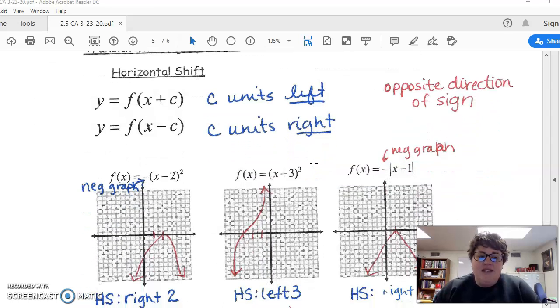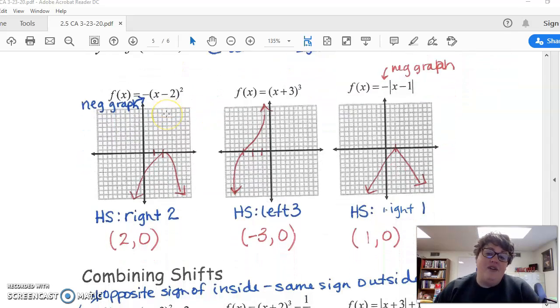Horizontal shifting is the inside of the graph—the x minus h portion. It's the opposite direction of the sign. If it's positive h, you move to the left. If it's negative h, you move to the right. Again, if the A is negative, it flips the graph over.